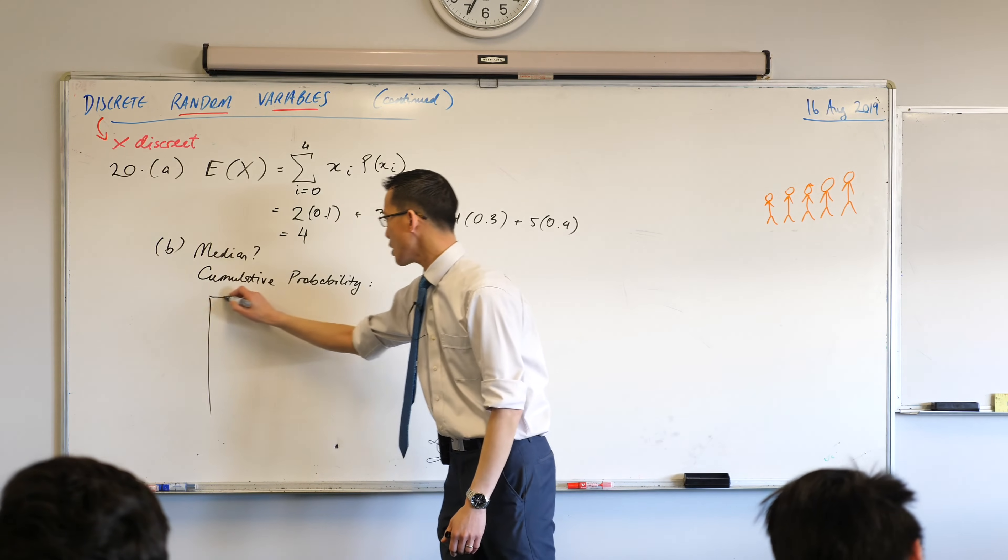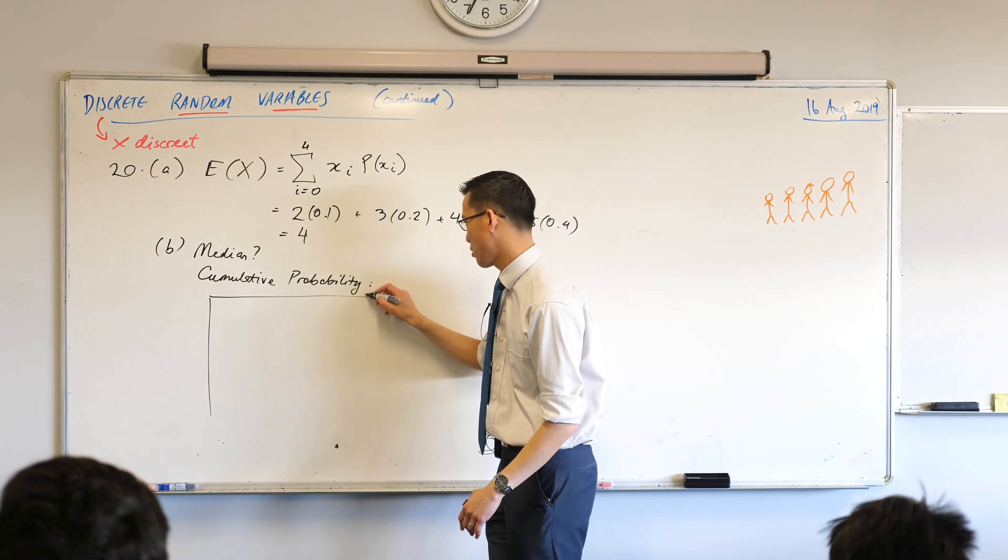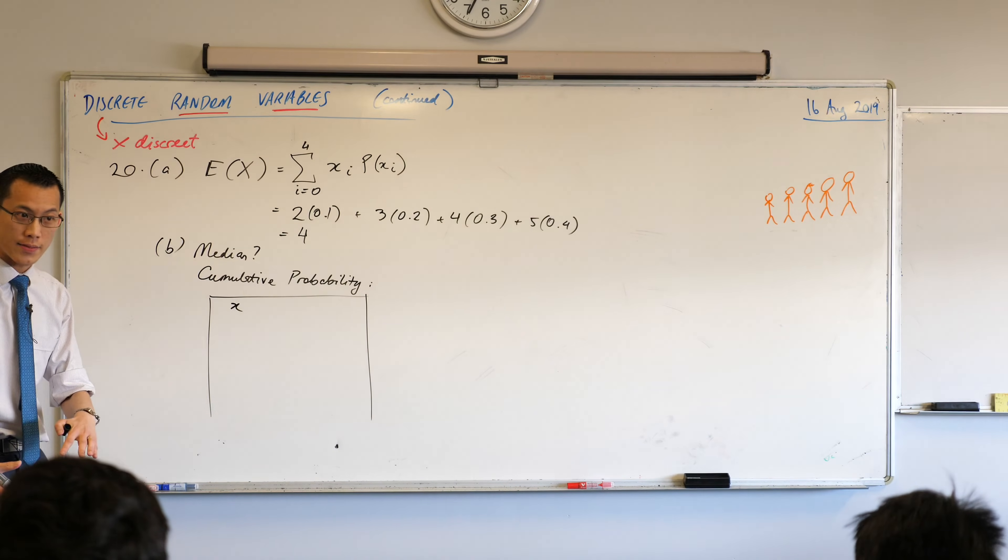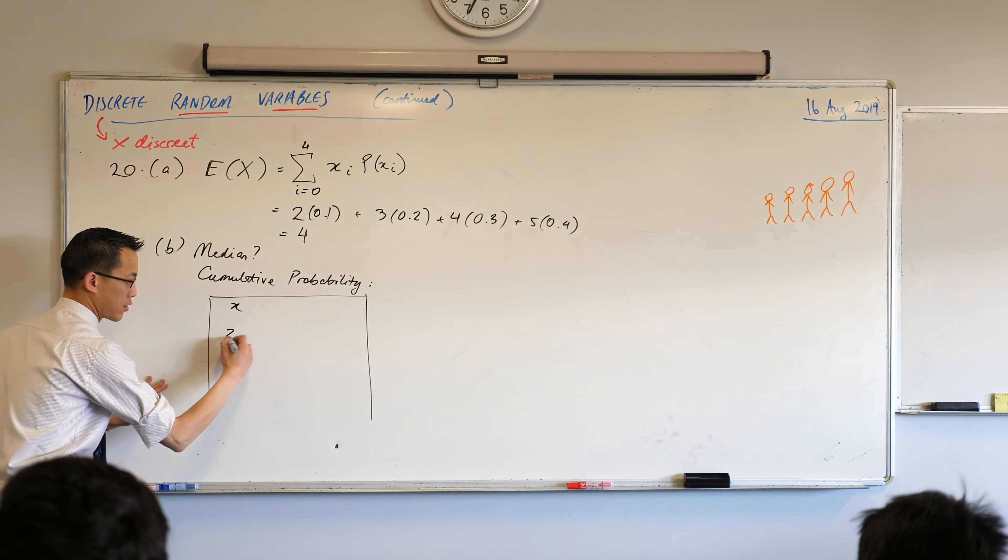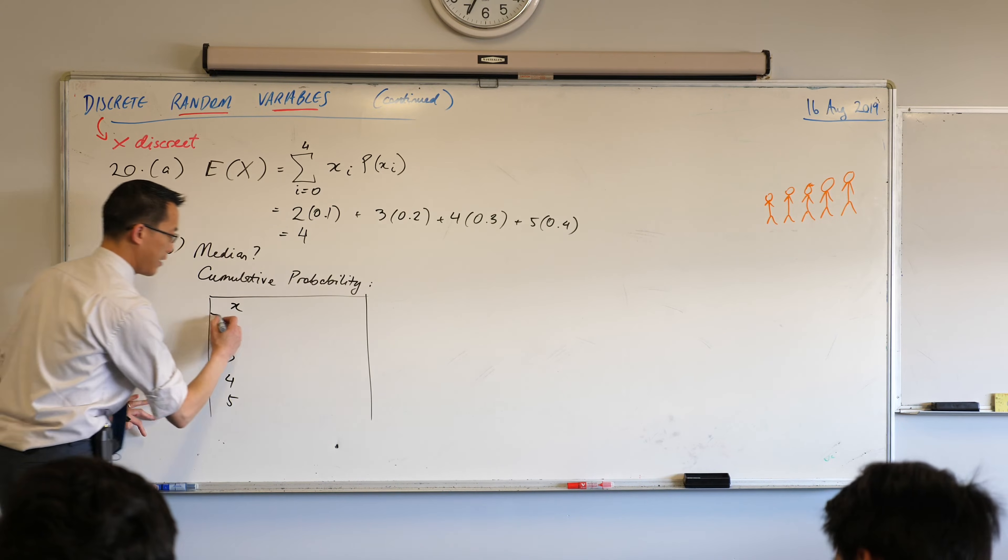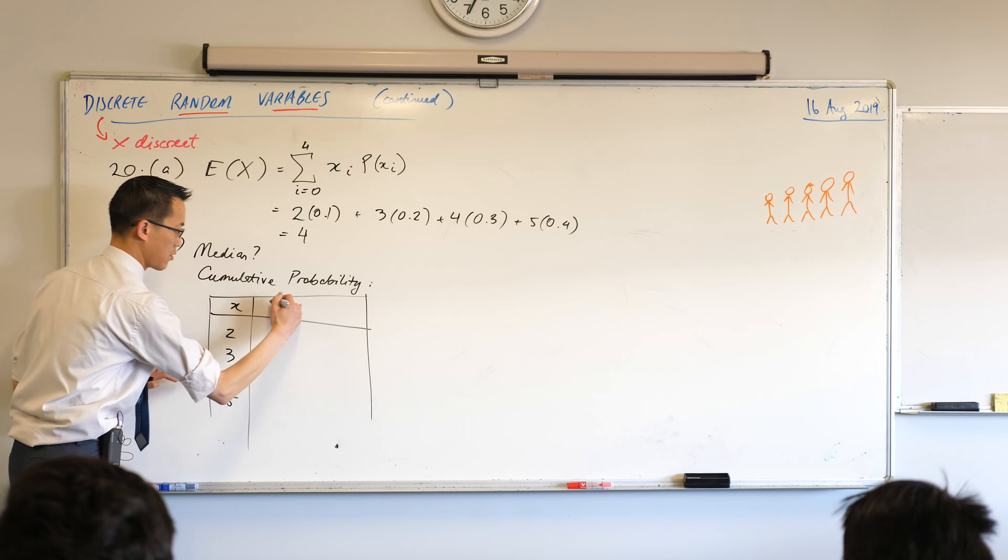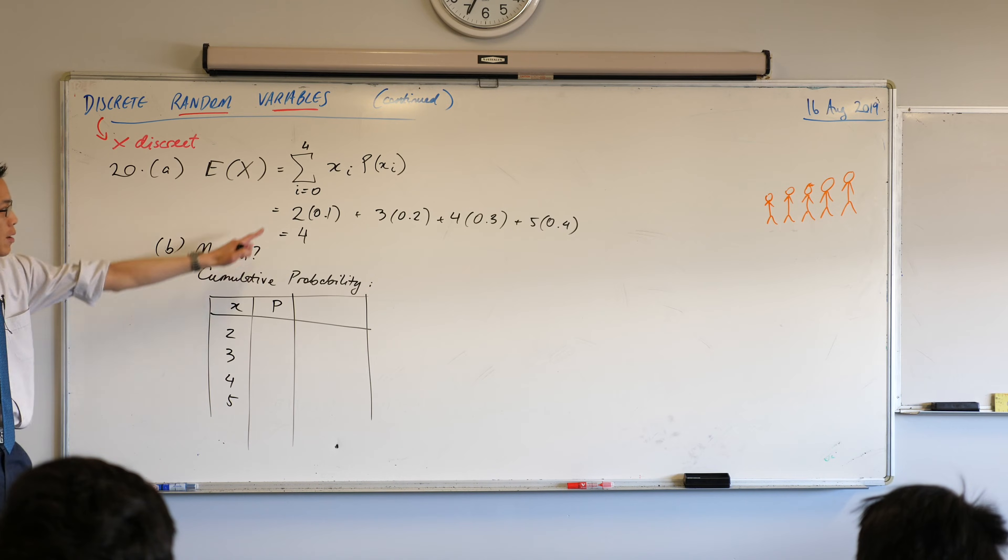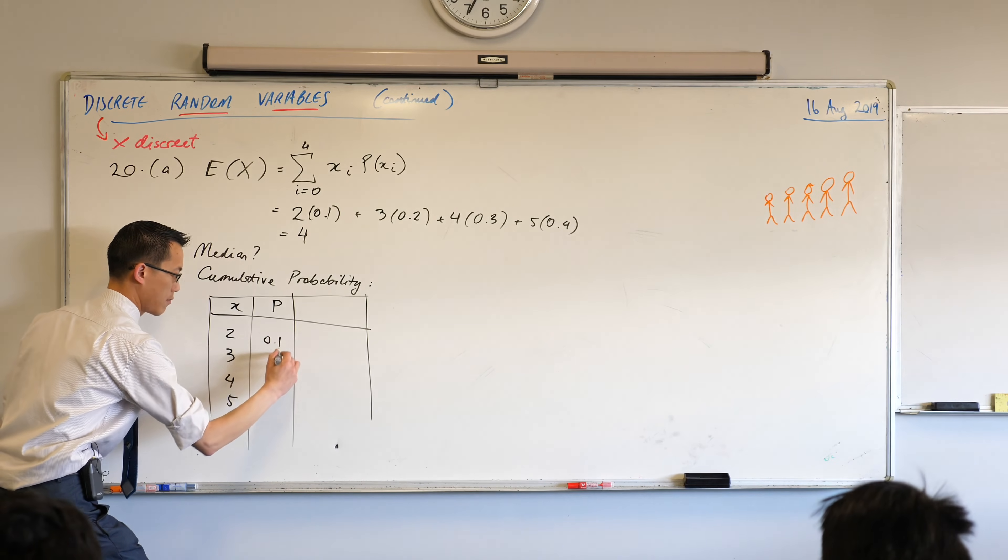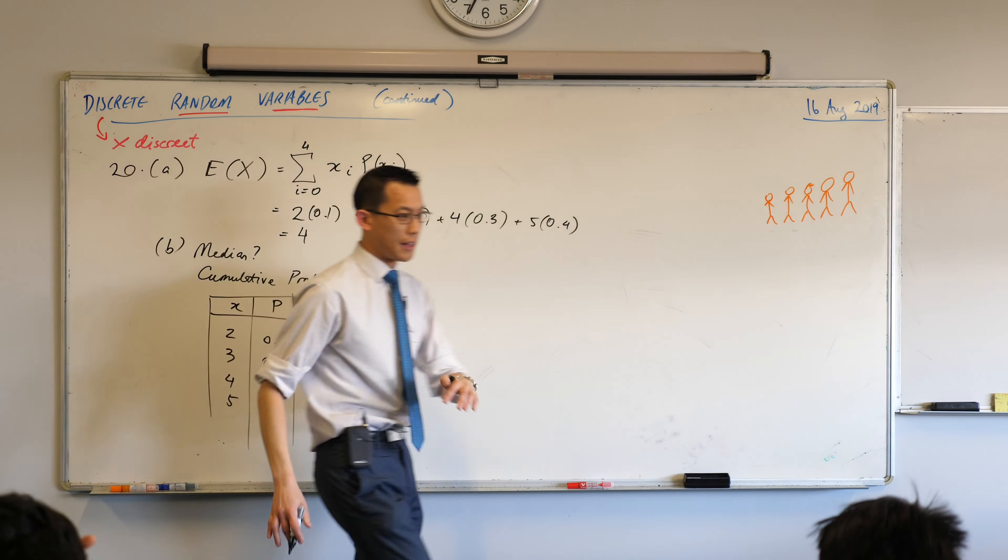So draw me a little table. And on our table, we will need, one, two, three columns. They don't need to be huge though. Three columns. The first column is going to be our particular x values. Now you already told me what they were. They are two, three, four, and five. In this table, we're also going to have the probability of those x values. So I'll just write P for probability. And we have that written now, in our expected value calculation. Yeah? So it's, 0.1, 0.2, and so on.